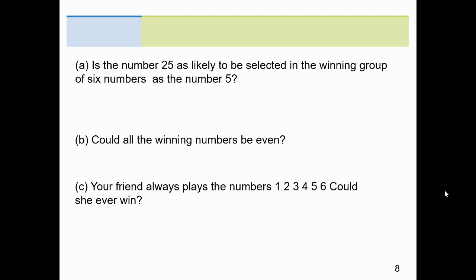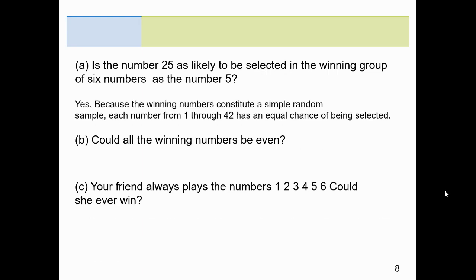All right, so the question is, he asks us, is the number 25 as likely to be selected in the winning group of six numbers as the number five is? Oh, yeah, because the winning numbers constitute a simple random sample. Every number that's drawn in some sort of a container, every number has the same chance of popping up. The five is just as likely to pop up as a 25. Could all the winning numbers be even? Sure, they could. What's to prevent it? Could be all even, could be odd.